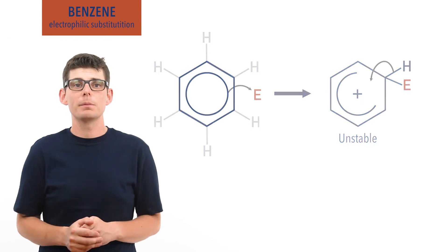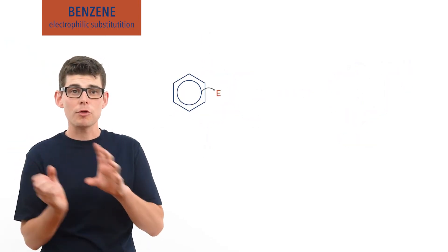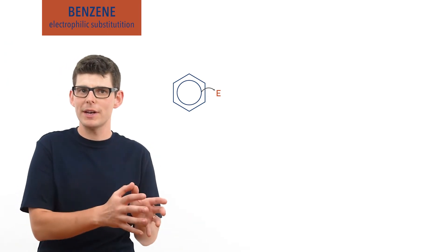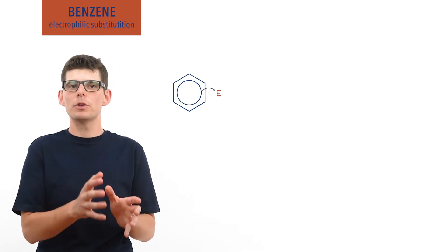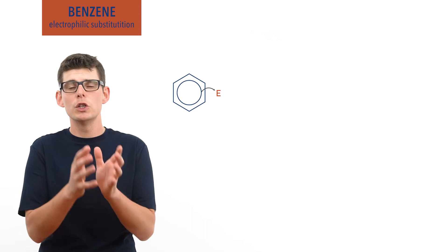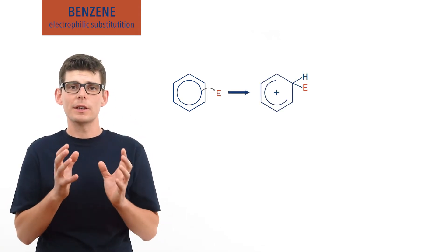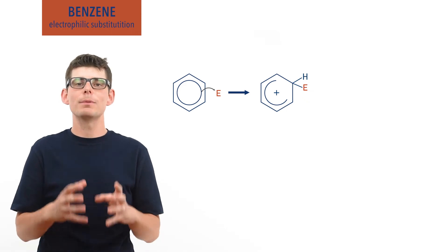So let's have a quick recap. An electrophile approaches benzene. A pair of electrons from the delocalized ring of electrons is used to form a bond between a carbon atom in the ring to the electrophile. This breaks open the ring of delocalized electrons and forms an unstable intermediate.